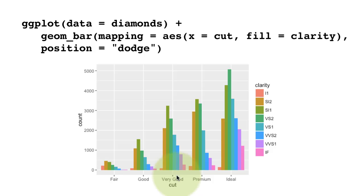So this is sort of, you might have seen such an option in Excel. So now for each cut, there are many bars. Not just one bar, but there are multiple bars with each level of clarity having its own separate bar.